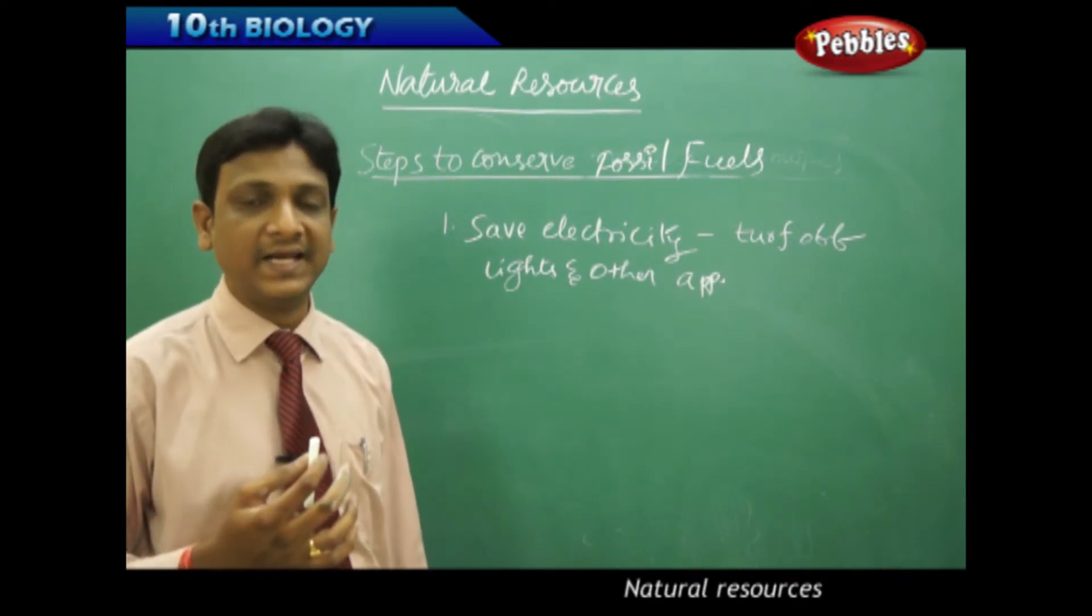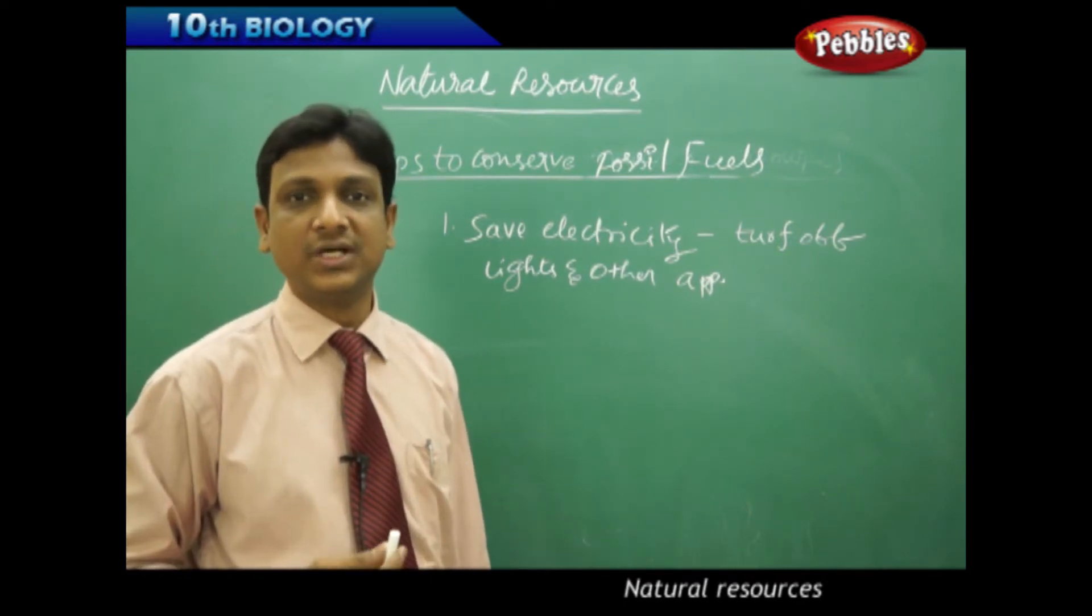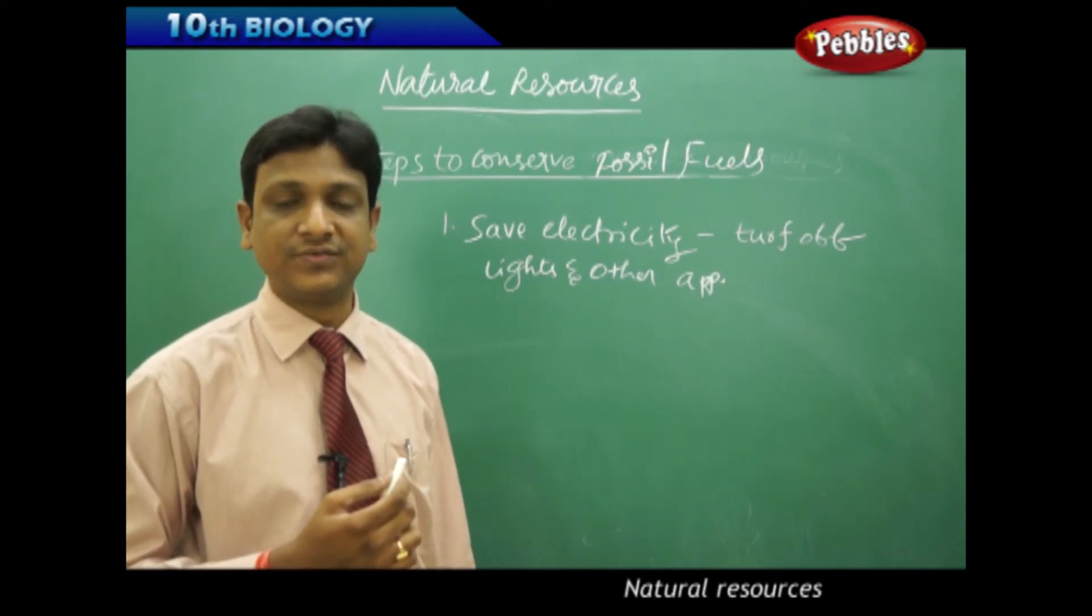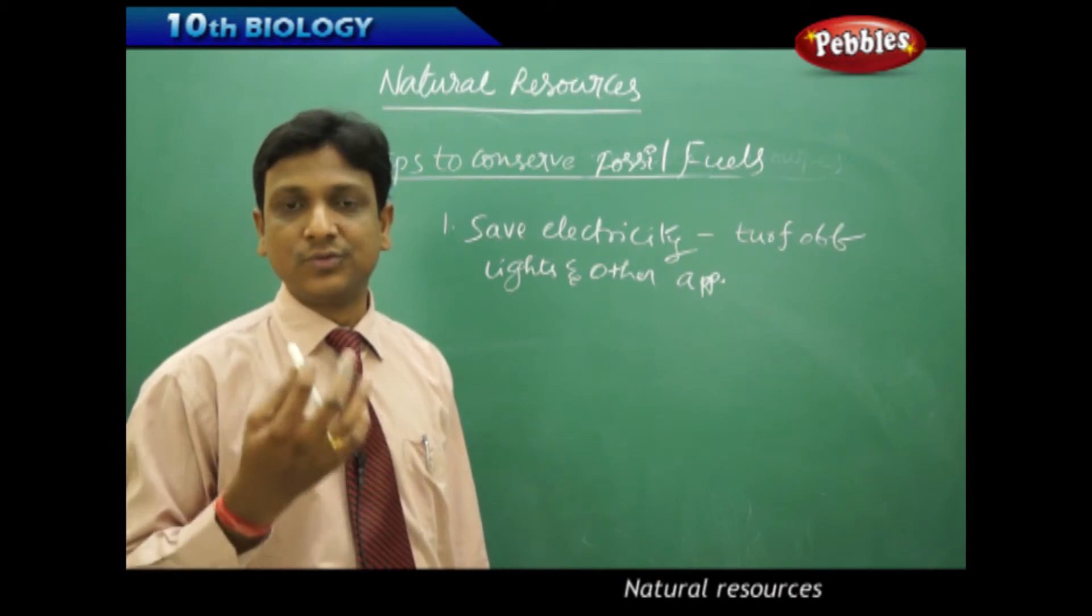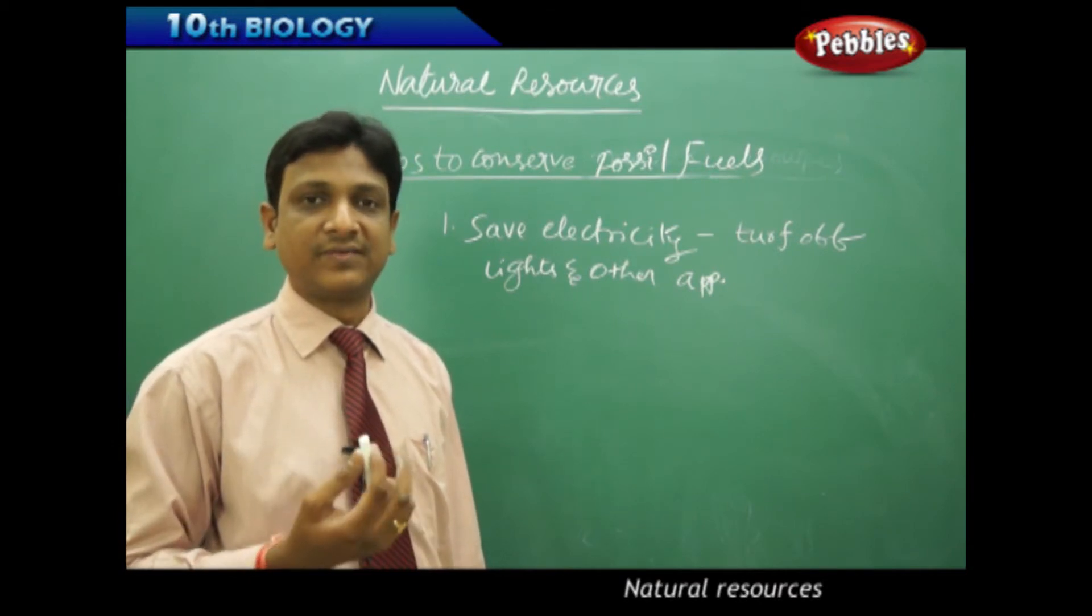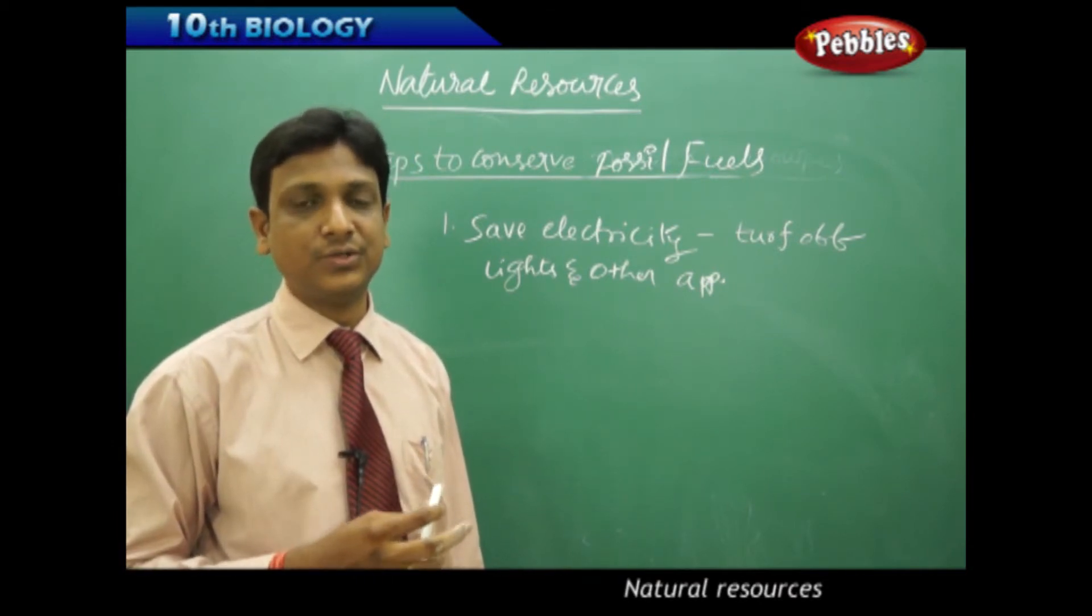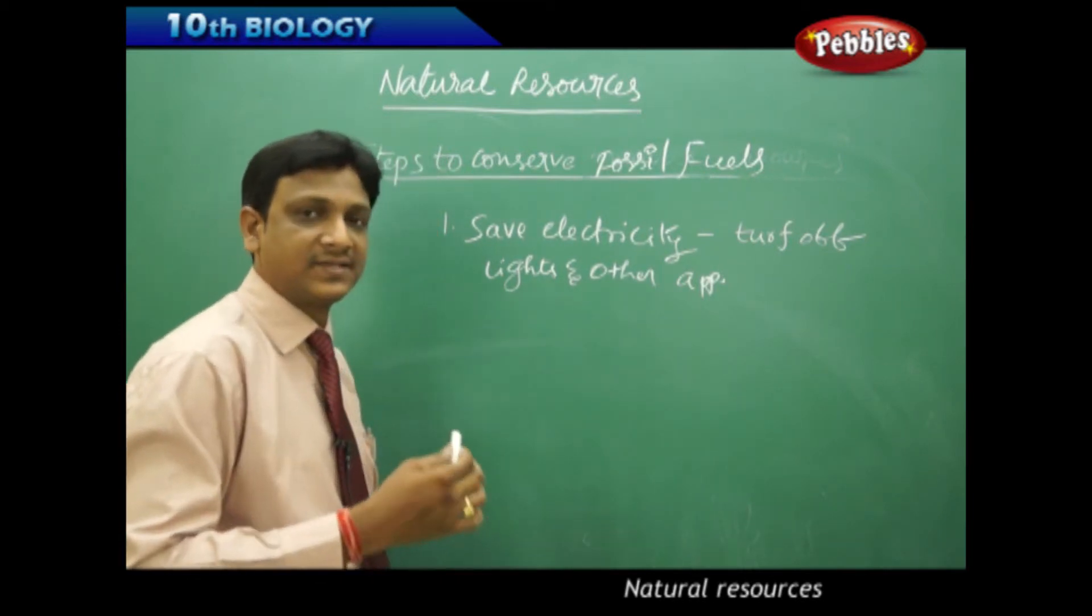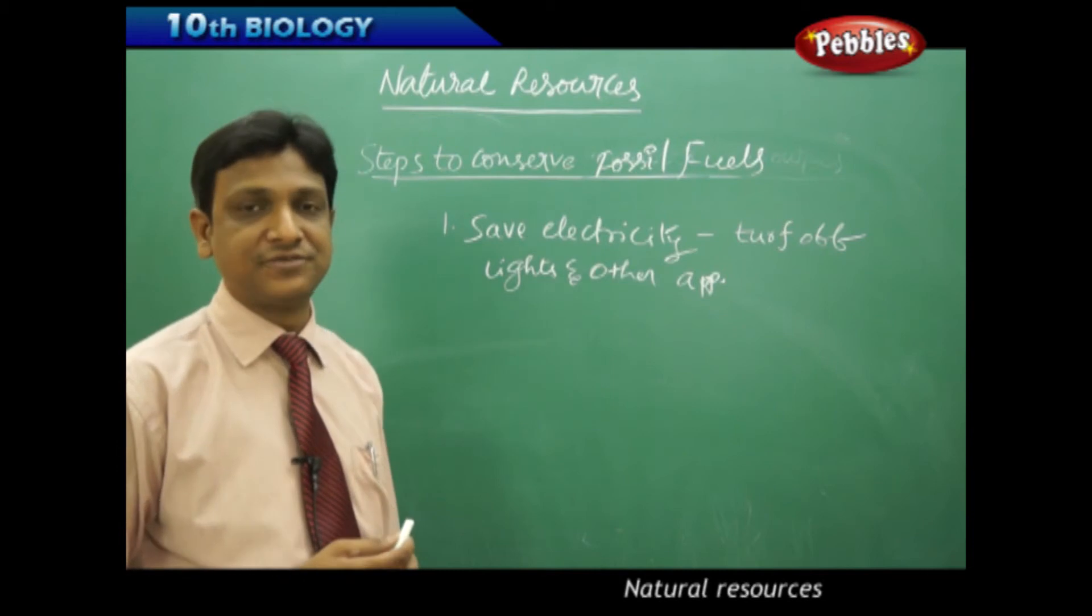You can go for CFL instead of normal lights, and more than CFL you know you have LED lights which will save more energy. You can go for LED lighting and you can go for automatic sensors for your switchboards. So when you are not there in the rooms, automatically they get switched off. Otherwise you can switch them off when they are not in use. Fans you can switch off. In this way you can conserve the electricity. So by that you will be conserving the natural resource coal.